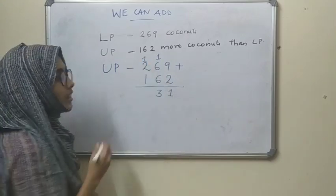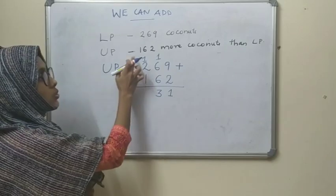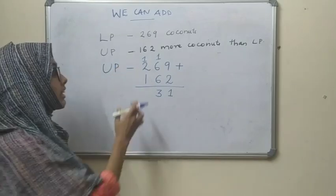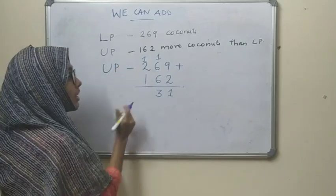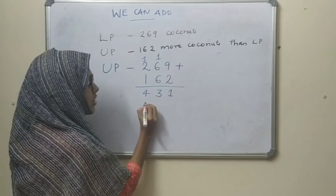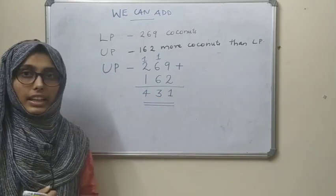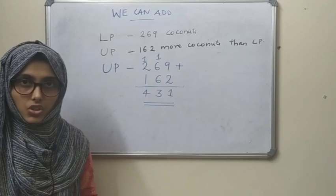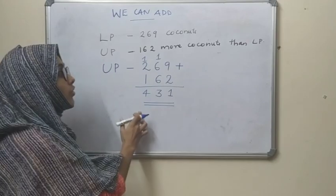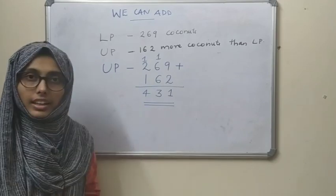We write 1 here. Now 2 plus 1 is 3, and 3 plus 1 is 4. So the total coconuts given by the UP section was 431 coconuts.